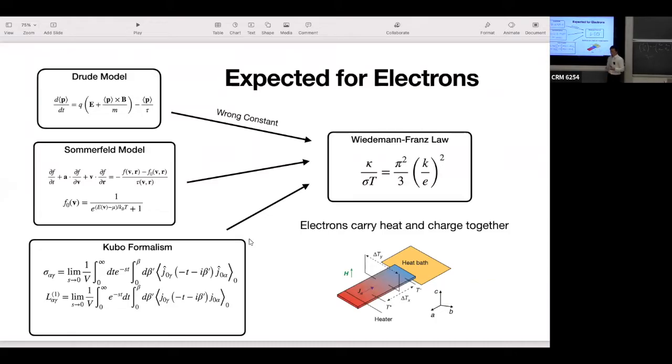In electrons, we have a Wiedemann-Franz law, which is a well-known law between the thermal conductivity and the electrical conductivity, and it's derived in many different scales, like the classical, the semi-classical Boltzmann transport equation, and Kubo-formalism, which is really quantum.